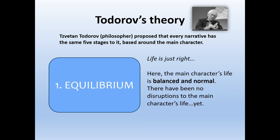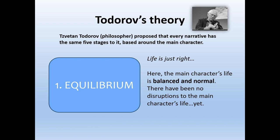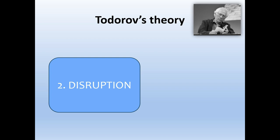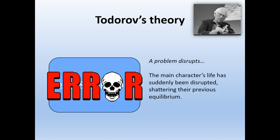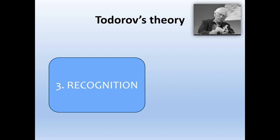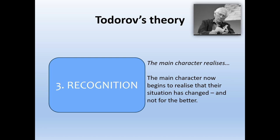Todorov argued every narrative follows a pattern of five stages. The first stage is equilibrium — the concept that life is just right, a norm exists for the character at the beginning of the plot, and the character's life appears normal and balanced with no major disruptions yet. The second stage is disruption — something happens to the protagonist to disrupt their equilibrium and change their life as it once was. The third stage is recognition, where the protagonist realizes their life has changed, usually for the worse — essentially the conflict of the story.